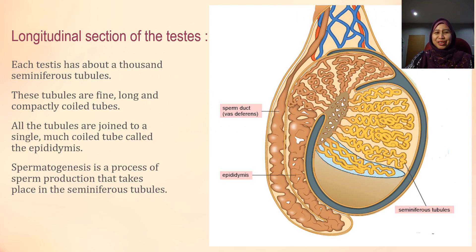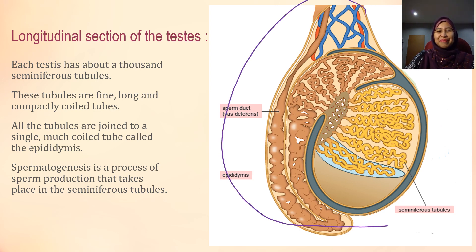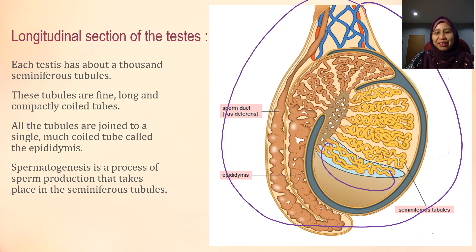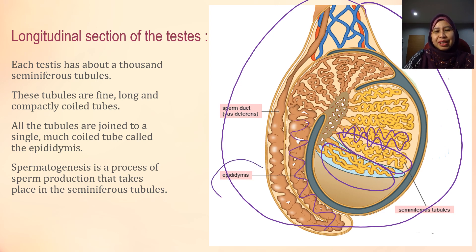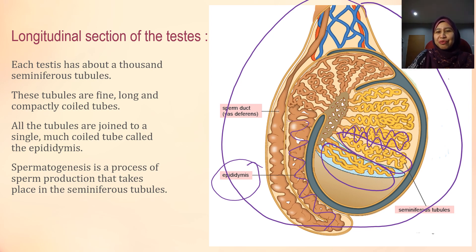Now we look at the longitudinal section of a testis. Each testis has about thousands of seminiferous tubules. These seminiferous tubules are fine, long and compactly coiled tubes — you can see they are highly coiled. All these tubules are joined to a single tube called the epididymis. Spermatogenesis, that is the process of sperm production, will take place here at the seminiferous tubules.